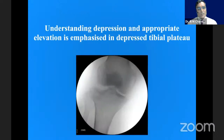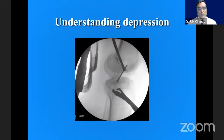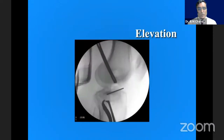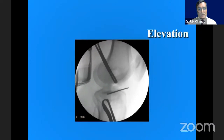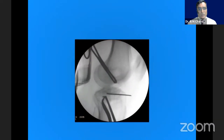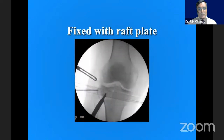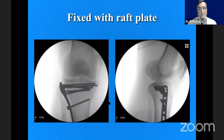Understanding the depression is key — here it looks subtle, but you can make out the density on C-arm. We must not miss it, and the cine loop effect allows you to appreciate the depression being elevated. Once the fragment is elevated nicely and fixation is done, that gives an absolute perfect restoration of the articular surface.